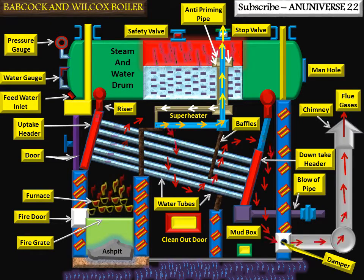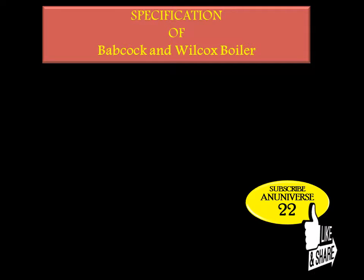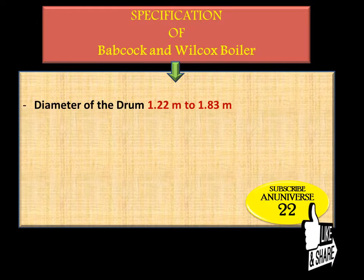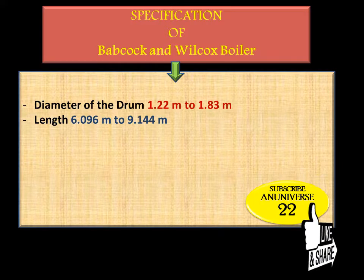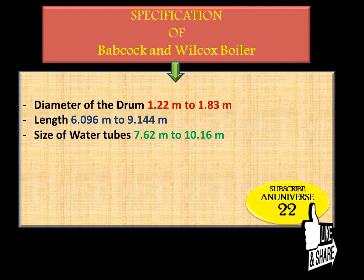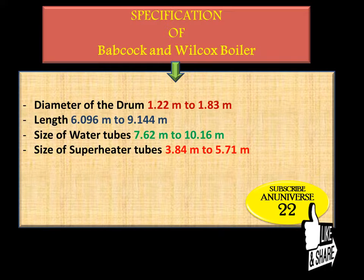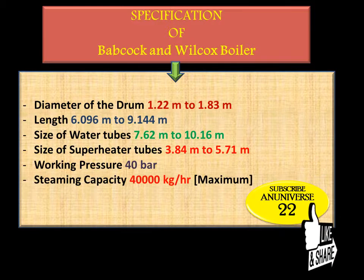The main specifications of the Babcock and Wilcox boiler are: the diameter of the drum generally varies from 1.22 meters to 1.83 meters; length varies from 6.096 to 9.144 meters; size of water tubes 7.62 to 10.16 meters; size of superheater tubes 3.84 to 5.71 meters; working pressure approximately 40 bar; steaming capacity up to 40,000 kg per hour maximum; and efficiency varies from 60 to 80 percent.